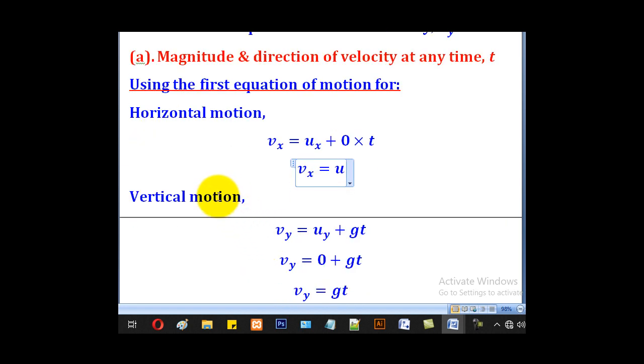For vertical motion, vy is equal to uy plus gt. So uy is 0, implying that vy is equal to gt.